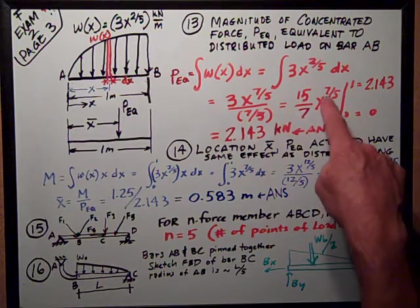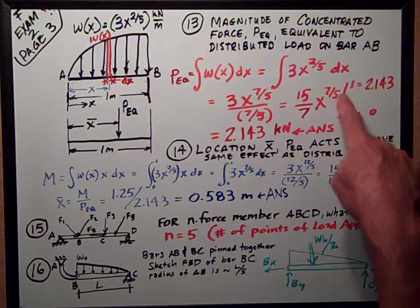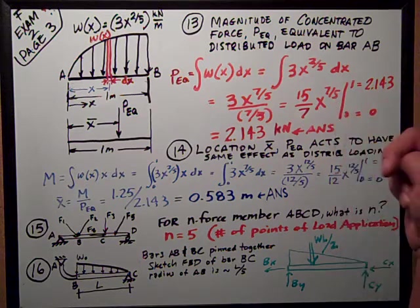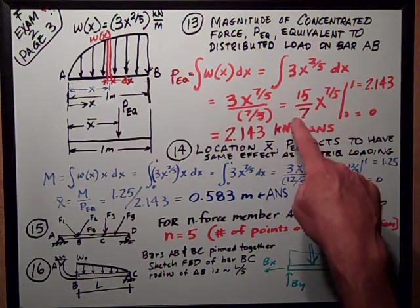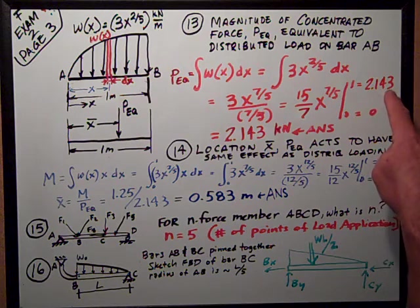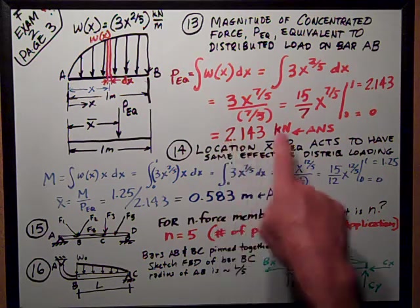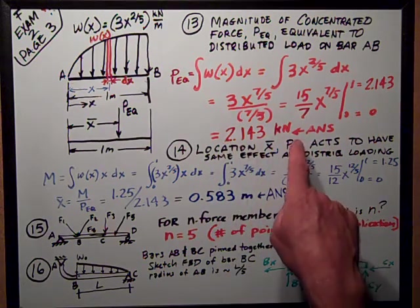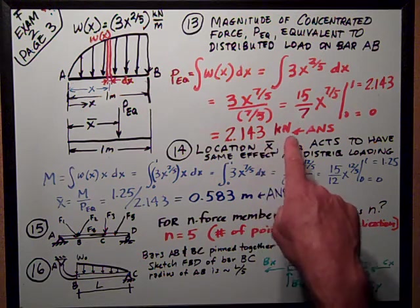At x equals 1, 1 to the seven-fifths power is still 1, so it's just 15-sevenths, 2.143. That's the answer to part, to number 13, 2.143 kilonewtons.